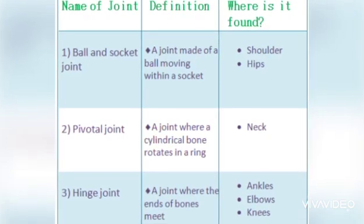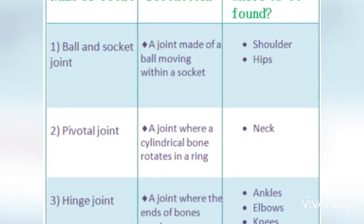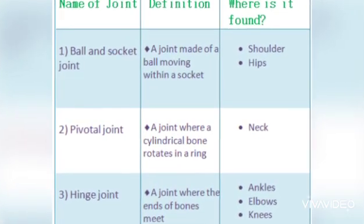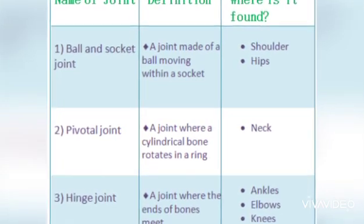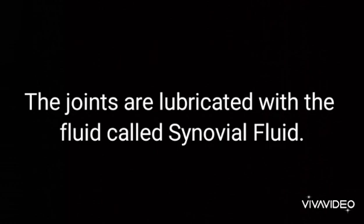Let's revise: ball and socket joints are found in the shoulders and hips; pivot joints are found in the neck; and hinge joints are found in the ankles, elbows, and knees. Did you know that joints are lubricated with a fluid called synovial fluid? It makes the movement of bones easy and smooth, just like oil does for an engine.